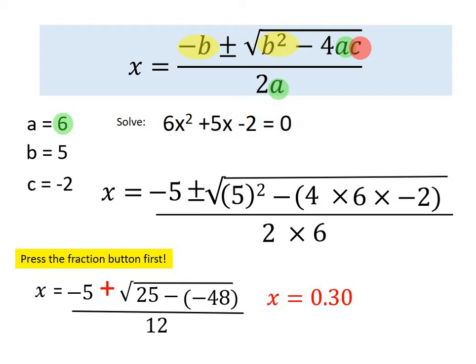And I get an answer of 0.30. That's actually 0.295, but I've rounded it to two decimal places. I then arrow across, back to that plus sign, and I change the plus to a minus. Because we want plus or minus the square root of 25, minus negative 48. So I change that to a negative, and this time I get an answer of 1.13. So the answer is x equals 0.30, or x equals 1.13.